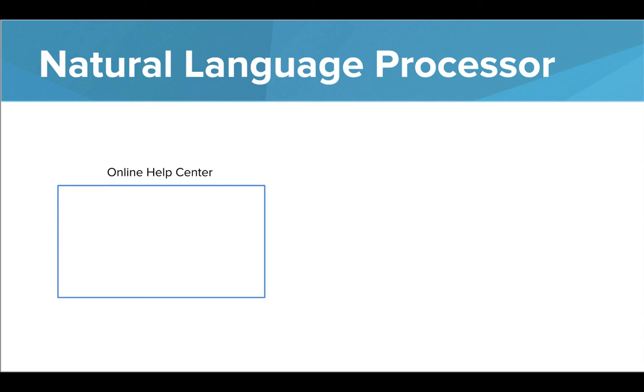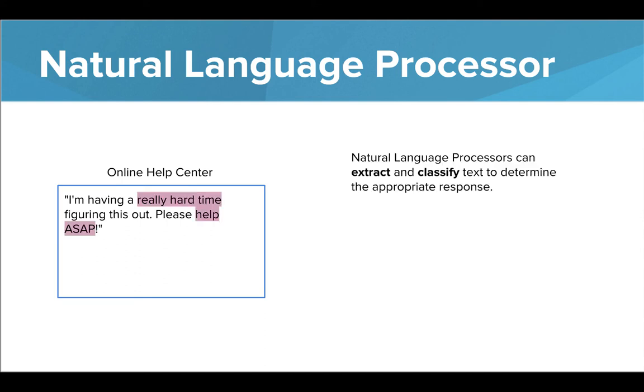Let's consider an online help center. People write in to the help center to get information from a chatbot, which is programmed using a natural language processor. A person writes in with an urgent question. They need help pretty immediately. The natural language processor in this chatbot is able to extract and classify the text to determine what the appropriate response should be. In this case, it scanned the request and found two phrases that are particularly important. The algorithm has been programmed to determine the urgency of a specific request and respond based on the level of urgency.